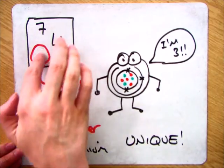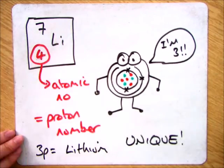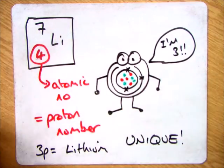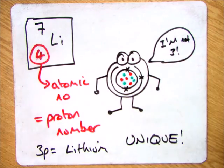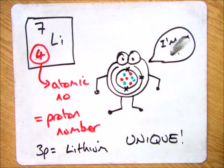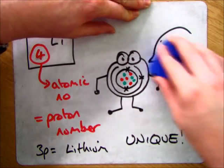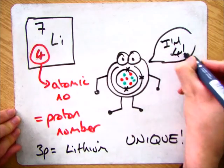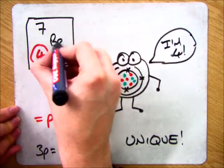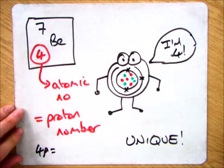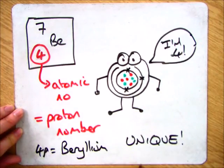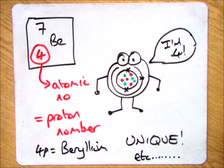It stays the same for every single individual atom. So what I mean by that: if you have three protons, you have lithium, and only lithium. If you have four protons, it is no longer lithium — it becomes beryllium. So it is unique.